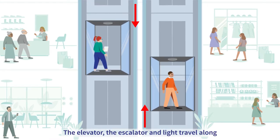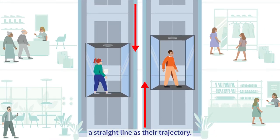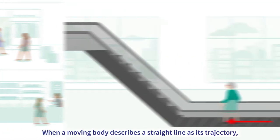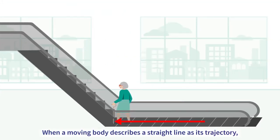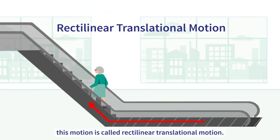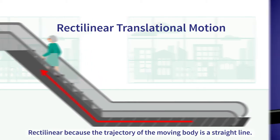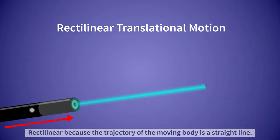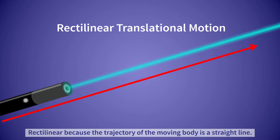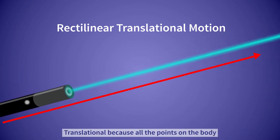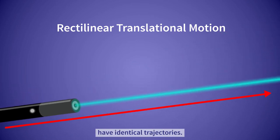The elevator, the escalator, and light travel along a straight line as their trajectory. When a moving body describes a straight line as its trajectory, this motion is called rectilinear translational motion — rectilinear because the trajectory is a straight line, and translational because all the points on the body have identical trajectories.